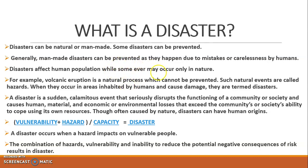For example, volcanic eruption is a natural process which cannot be prevented. Such events are called hazards. When they occur in areas inhabited by humans and cause damage, they are termed as disasters. Natural calamities like earthquakes, volcanoes, and cyclones — when they damage humans or human settlements, we call it a disaster.